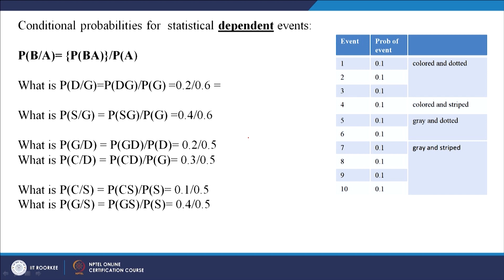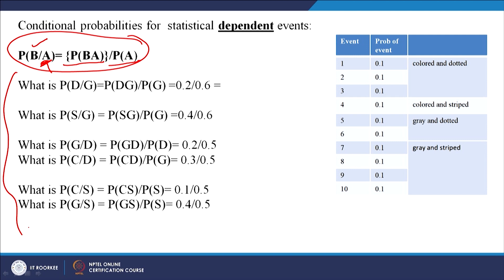The formula for conditional probability under statistical dependence is: P(B|A) equals P(BA) divided by P(A). Using our table, what is the probability that the ball is dotted given it is gray? There are 6 gray balls so P(gray) equals 0.6, and 2 of them are dotted so P(gray and dotted) equals 0.2. Therefore 0.2 divided by 0.6 equals 1/3.